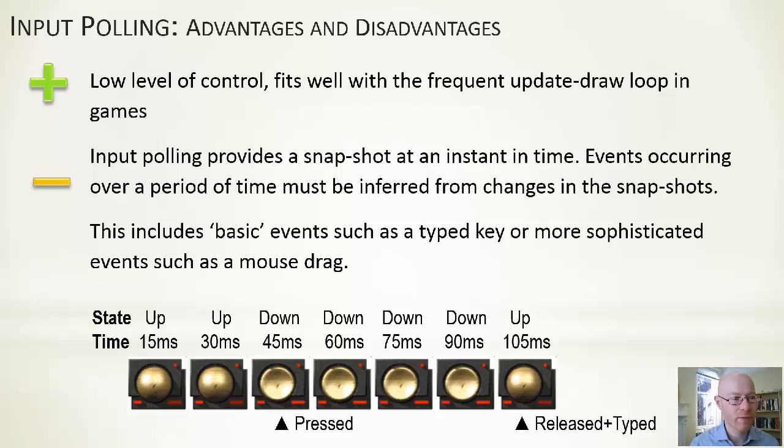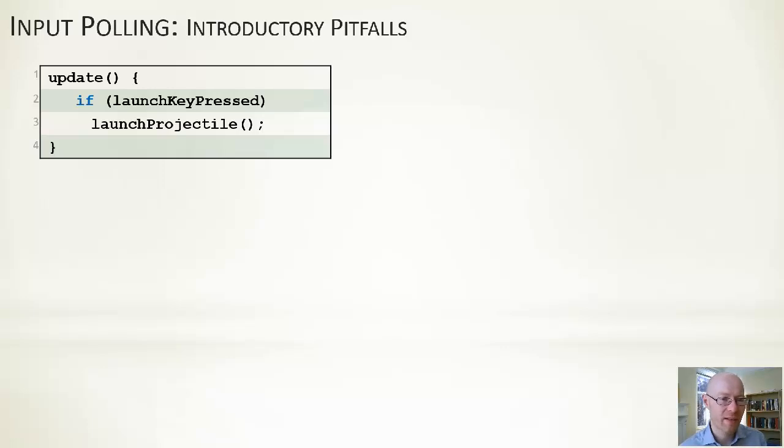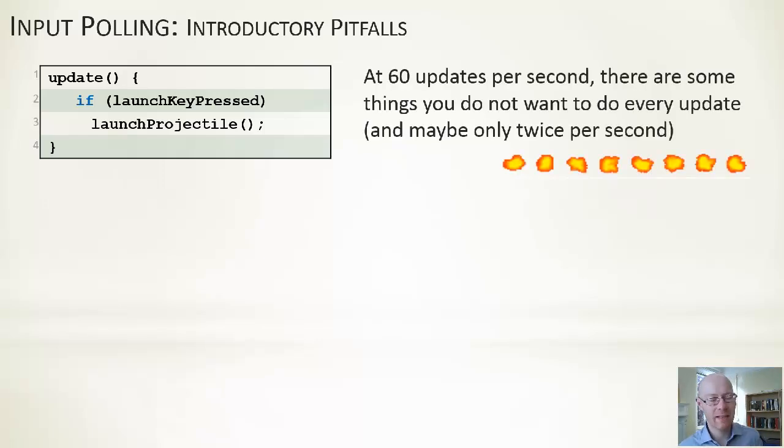There are some things to be careful of, pitfalls. There's a section of code you want to avoid. We update our game, say 30 times a second. If the launch key is pressed, then we launch the projectile. The problem with that is that at 60 updates a second, we will launch the projectile 60 times a second. As opposed to maybe something you imagine would only be firing once or twice a second, you get 60 of them a second. So quite often you want to put guards in.